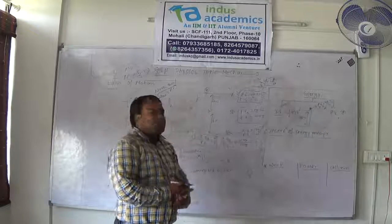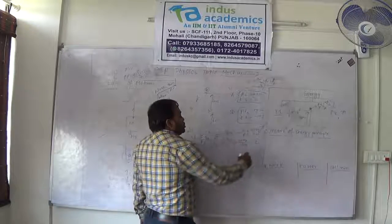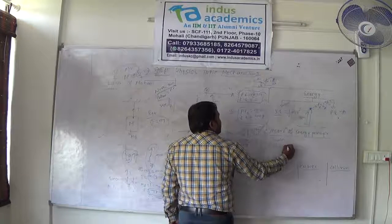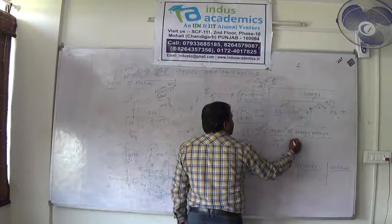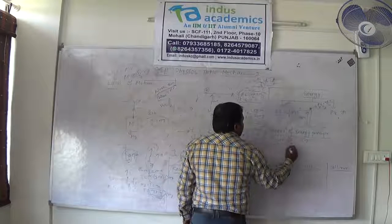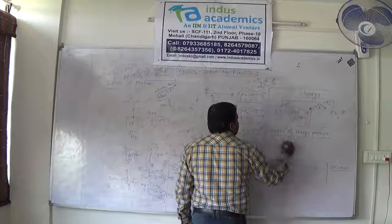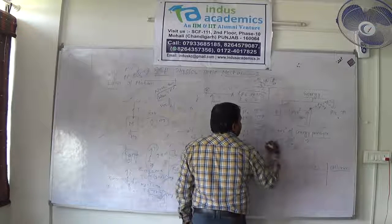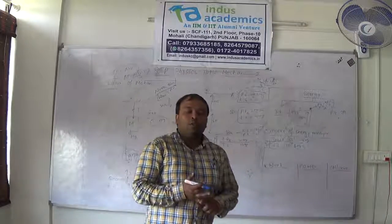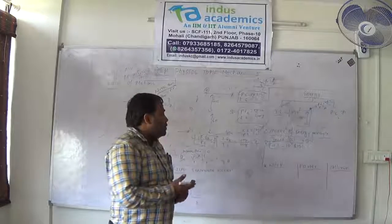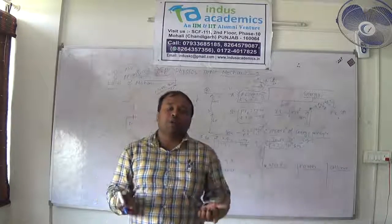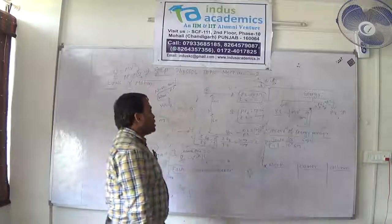The unit of energy is joules (SI unit); ergs is the CGS unit. One joule equals 10 to the power 7 ergs. Energy is a scalar quantity; work is also a scalar quantity — they have no direction. Any kind of energy, whether electrical, mechanical, or otherwise, is scalar and has the same unit.